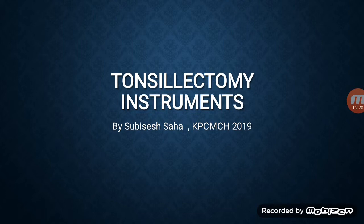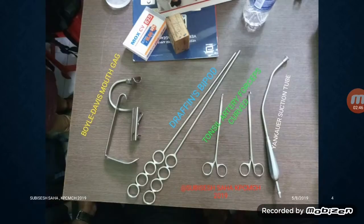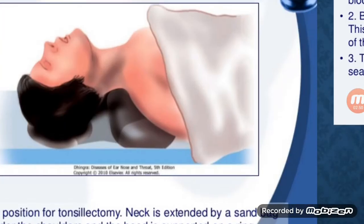It can also be done as part of another operation such as palatopharyngoplasty or glossopharyngeal neurectomy. Coming to the operation, we usually use general anesthesia with endotracheal intubation. The position used is the most characteristic one — the rose position, named after the flower used for proposals. In the rose position, the neck is extended by keeping a sandbag under the shoulder and tilting the head backwards.